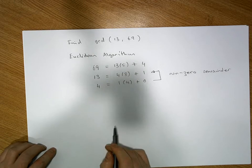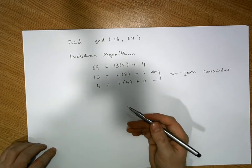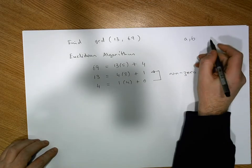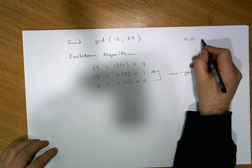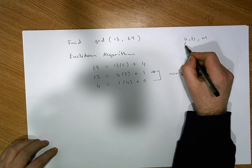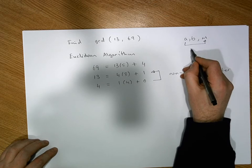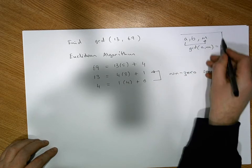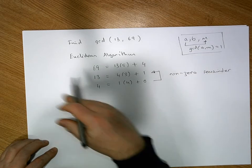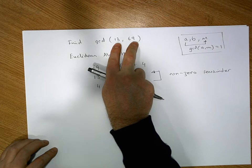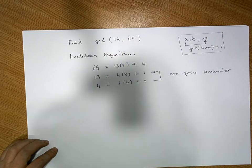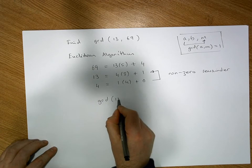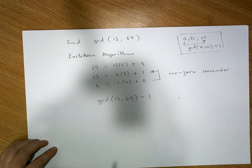In all three examples the last non-zero remainder was 1. This is important especially in relation to the affine cipher — when we define our a's, b's, and the size of our alphabet m, we want a to be relatively prime to m, meaning the GCD of a and m must equal 1. So in this case, the GCD of 13 and 69 is equal to 1.